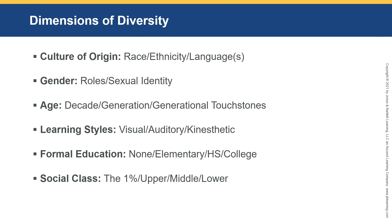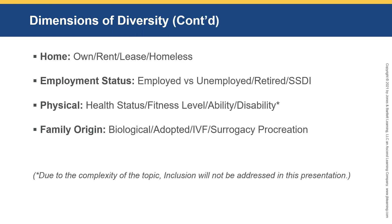Then there's social class: the upper 1% who are bazillionaires, the upper class, the middle and lower class. Other dimensions include housing — do you own, rent, lease, or are you homeless? Someone can be homeless one day and have a home the next, but it's very impactful on their lives and how they're treated. Employment status — whether you're employed, unemployed, or retired, maybe on Social Security or disability insurance — these are all very important in terms of how we are perceived and how people interact with us.